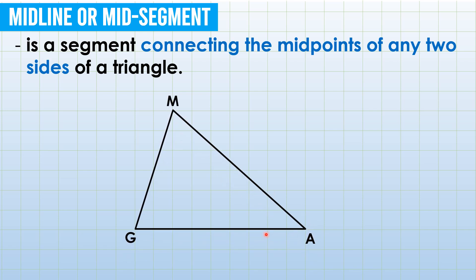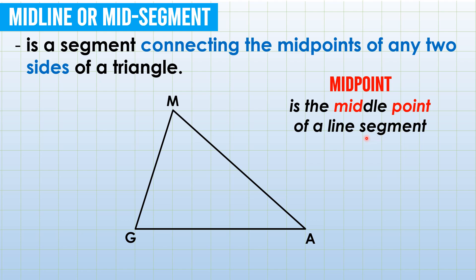Let's have a triangle MAG here and recall that midpoint is the middle point of a line segment. If you choose MG and MA as our two sides of a triangle and locate their midpoints, the midpoint of MG is somewhere here and for MA it is somewhere here. Let's name those points midpoint I and midpoint C. Since point I is the midpoint of MG, it follows that MI is congruent to IG. Similarly, segment MC is congruent to segment CA.